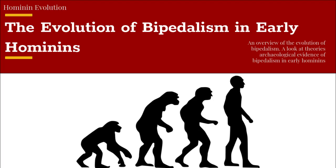Before we dive into this topic, I would like to discuss the image presented on the screen. You probably recognize this as a stereotypical symbol of evolution. However, this image is very inaccurate to how evolution actually works. The more accurate version would be an evolution tree. The evolution of early hominins was a more branching structure, and this can be applied to most every other single animal.